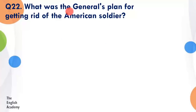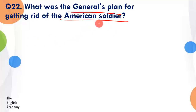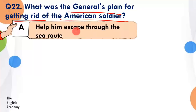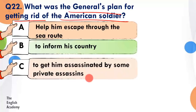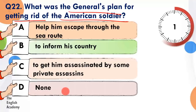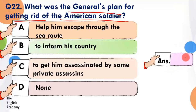Question number 22: What was the general's plan for getting rid of the American soldier? Jab Dr. Sadao ne general ko bataya ke wo ek American soldier ki madad karne mein faas gaye hain jo zakhmi unke ghar ke bahar pada tha. Option A: help him escape through the sea route. Option B: to inform his country. Option C: to get him assassinated by private assassins. Option D: none of these. The answer is Option C — unhone ye plan bataya ke woh wahan pe koi private assassins, yaani killers ko bhejenge jo us soldier ko maar denge.